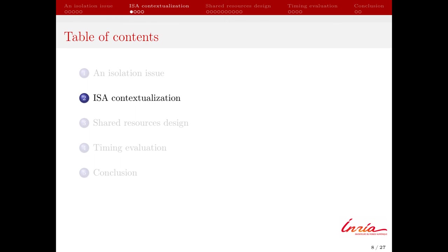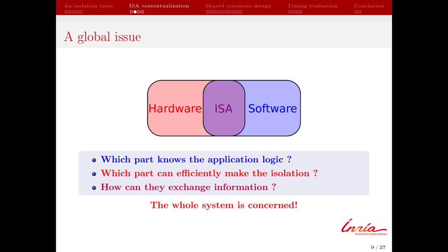A complete system has three main parts: the hardware which performs operations, the software which describes an application as a list of operations, and the ISA which is the interface between them and offers an abstraction of the hardware to the software. To understand all dimensions of our problem, we must answer some questions. First, which part knows the application constraints? It is the software, which is developed independently of the implementation. Different applications will not necessarily have the same security needs.